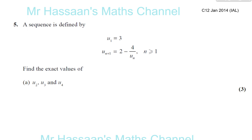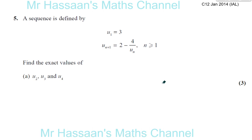First of all, pretty simple, find the exact values of U2, U3 and U4. They told us that the first term U1 is 3 and to find the next term you do 2 minus 4 over the term before it. This recurrence relationship just simply means that. It means to find the next term you have to take 2, subtract from 2, 4 over the previous term.